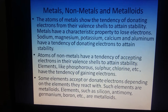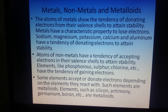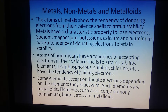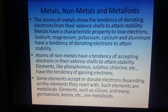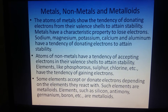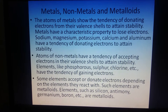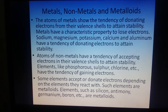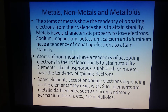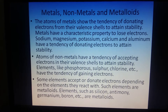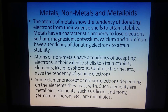Let us see stability in metals, non-metals and metalloids. The atoms of metals show a tendency of donating electrons from their valence shell to attain stability. Metals want to lose their electrons to gain stability. Elements such as sodium, magnesium, potassium, calcium, and aluminium have a tendency of donating electrons to attain stability.